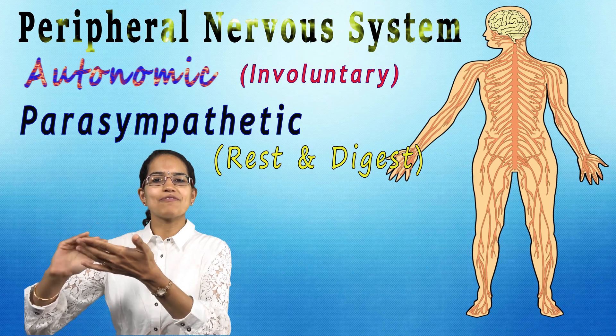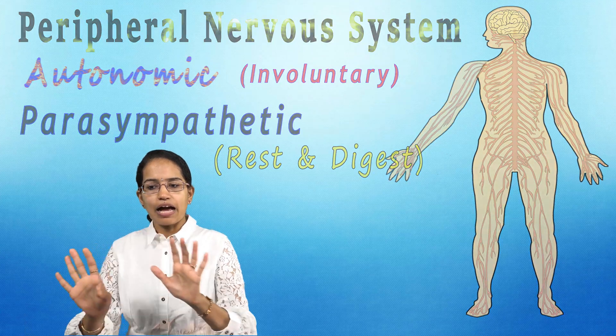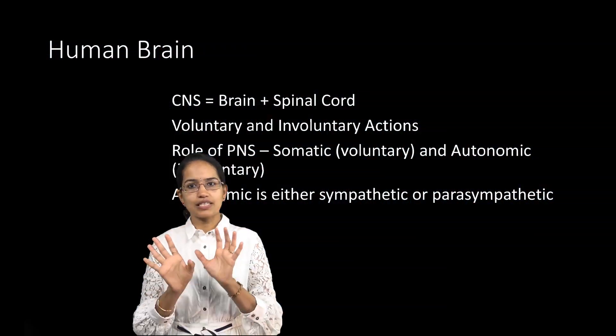Autonomic is a further subdivision of your peripheral nervous system. I believe everything is clear so far.